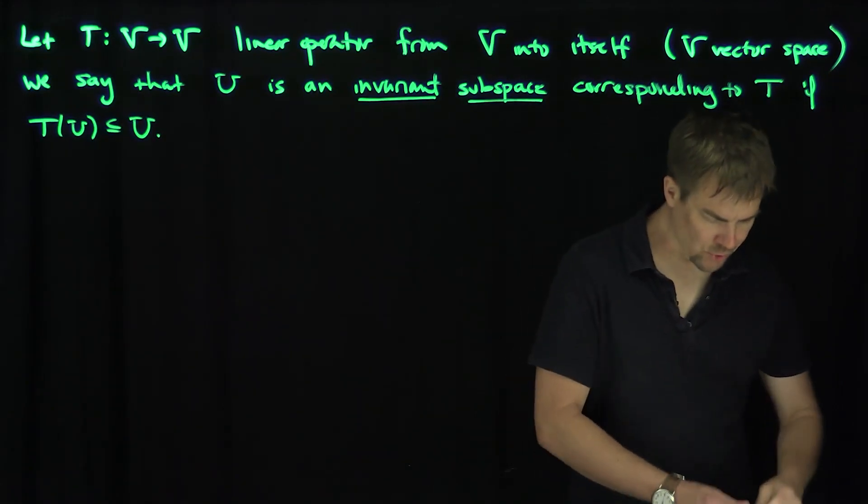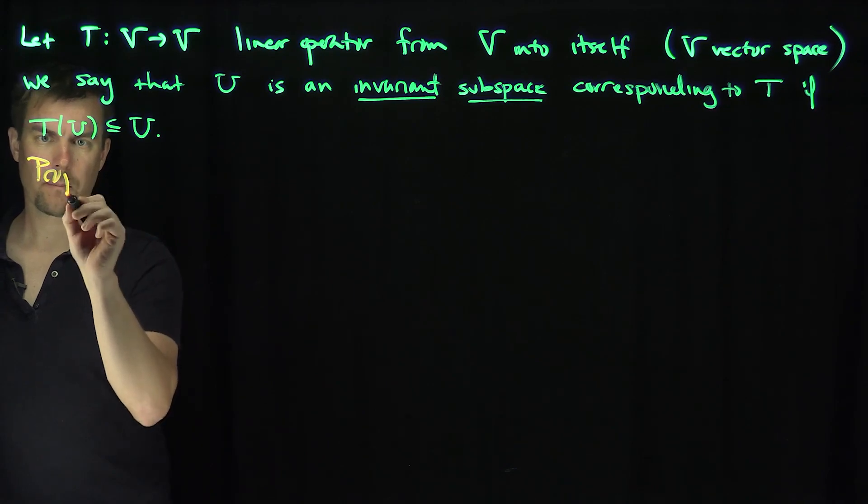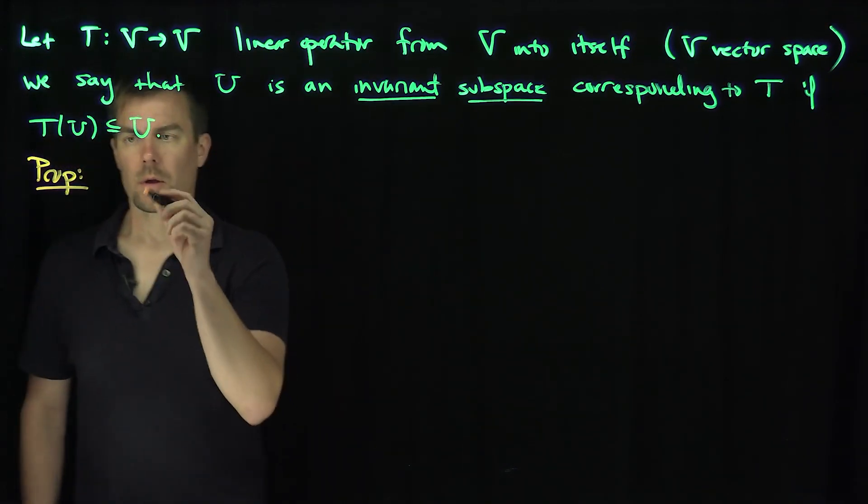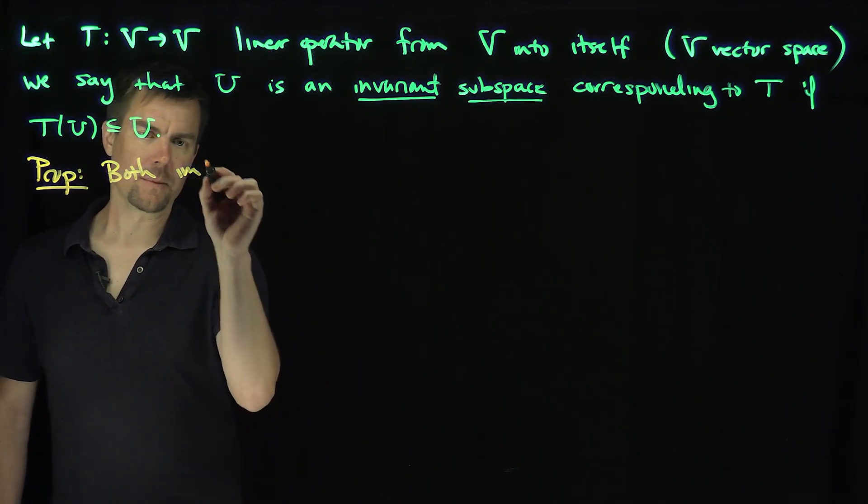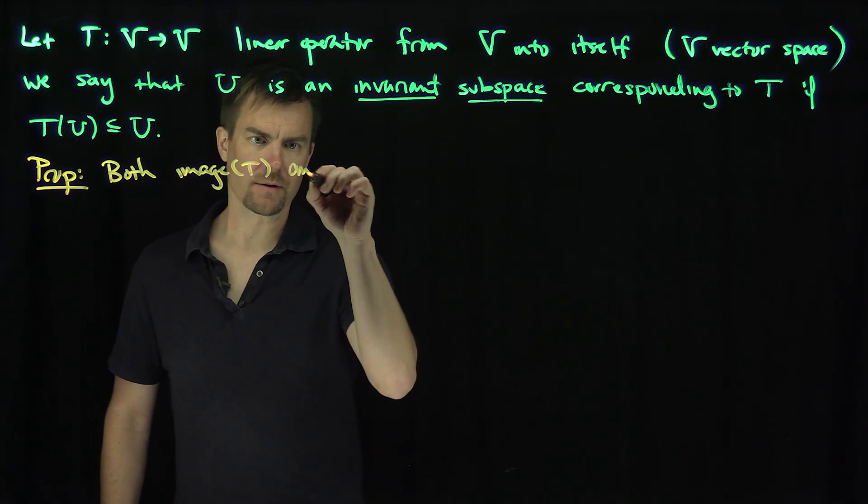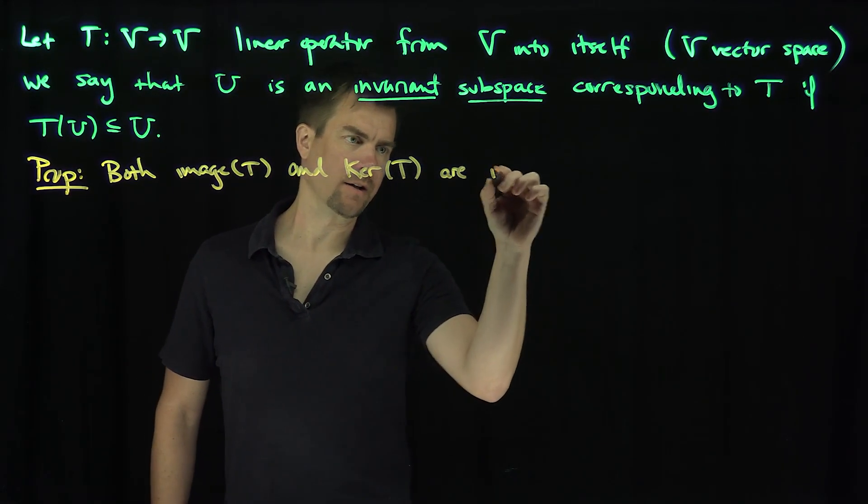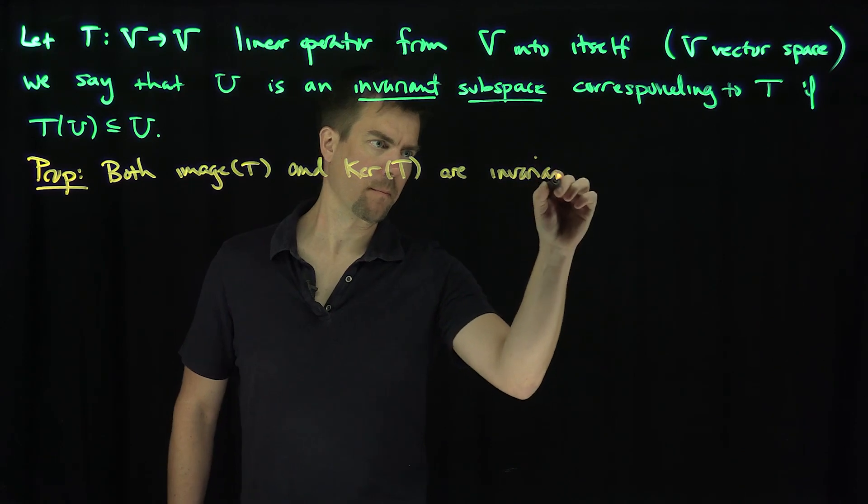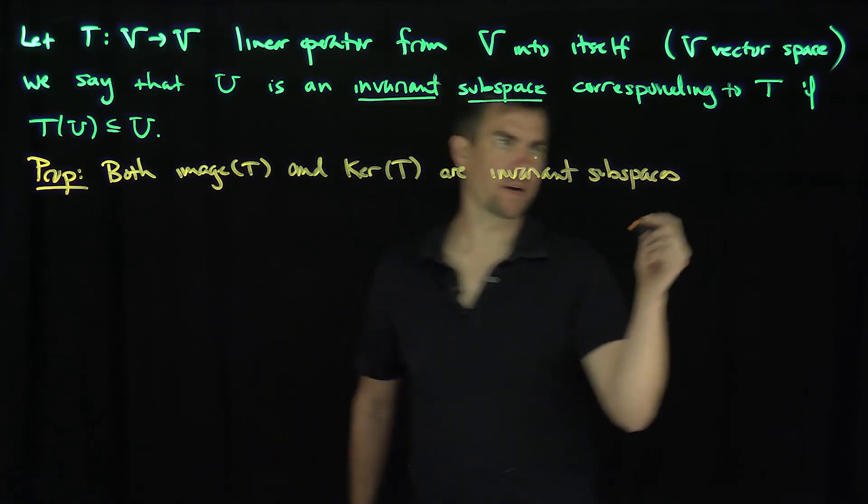So there's always two trivial examples of invariant subspaces. Proposition: Both the image or the range of T and the kernel of T are invariant subspaces corresponding to T.